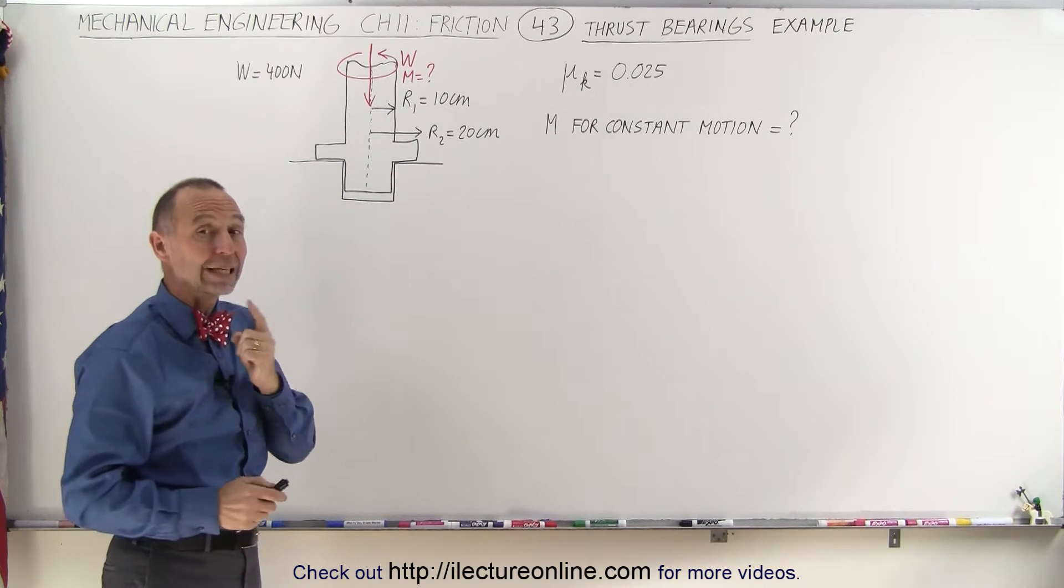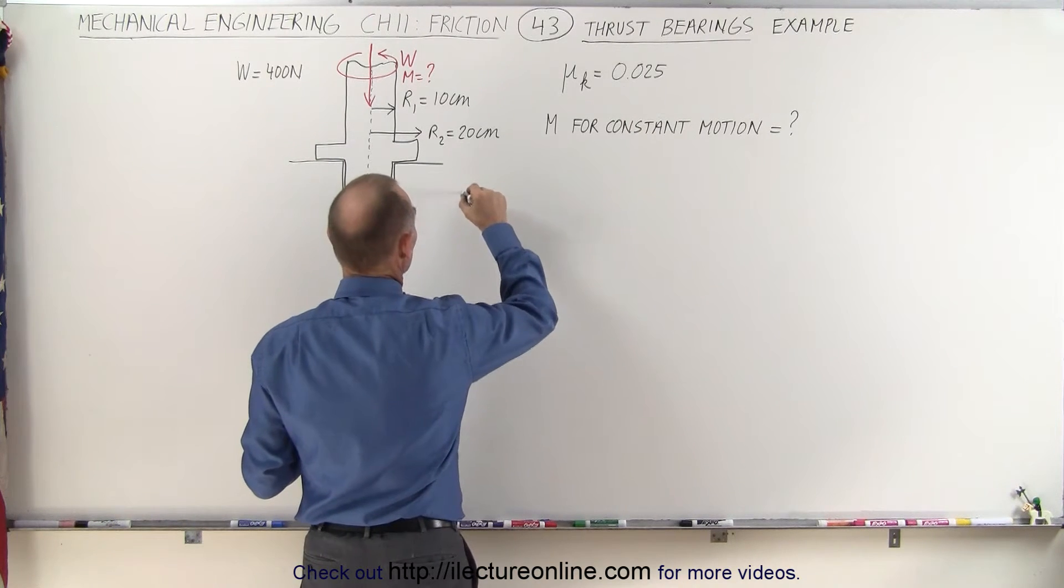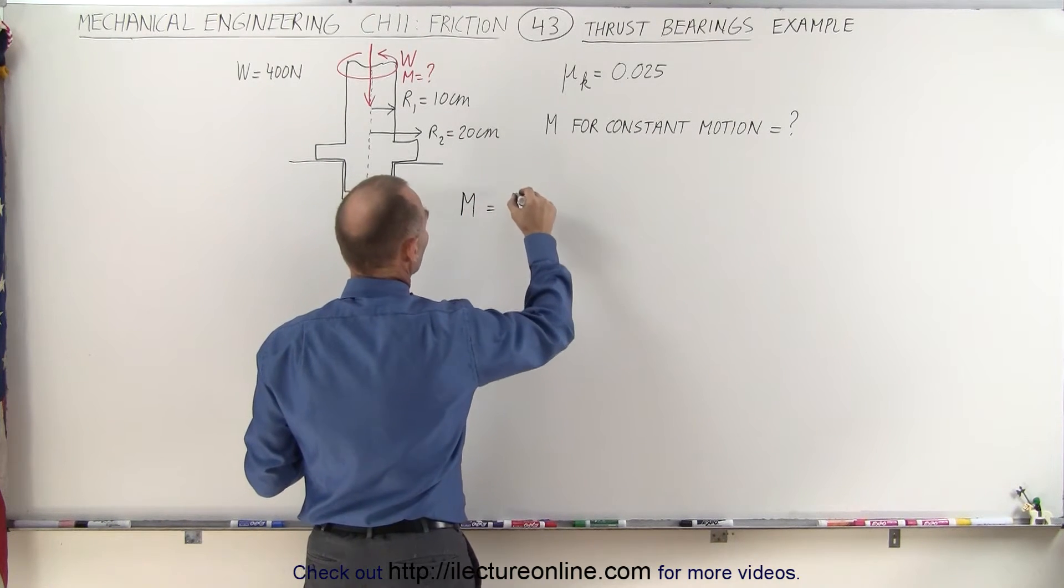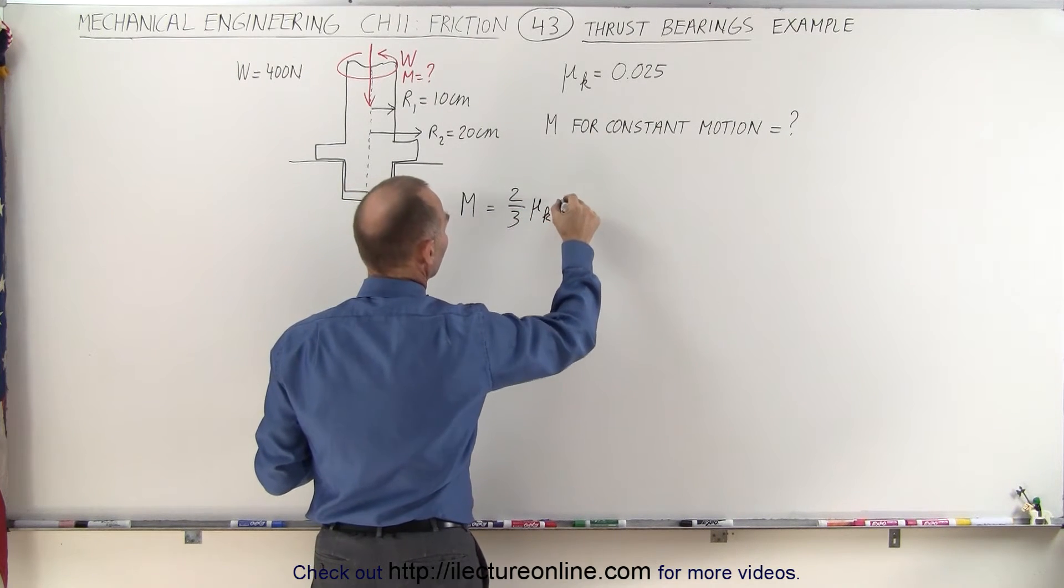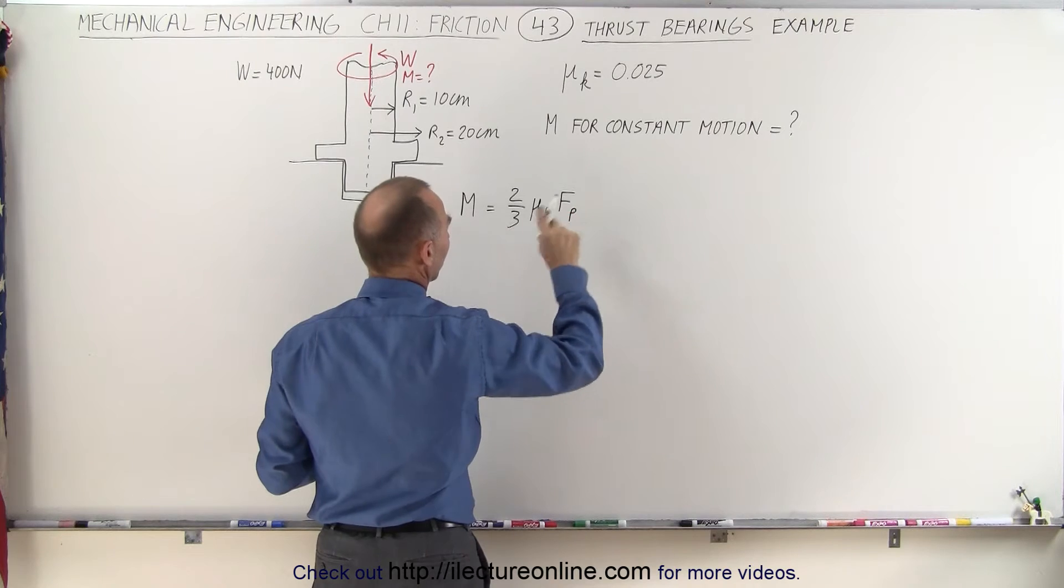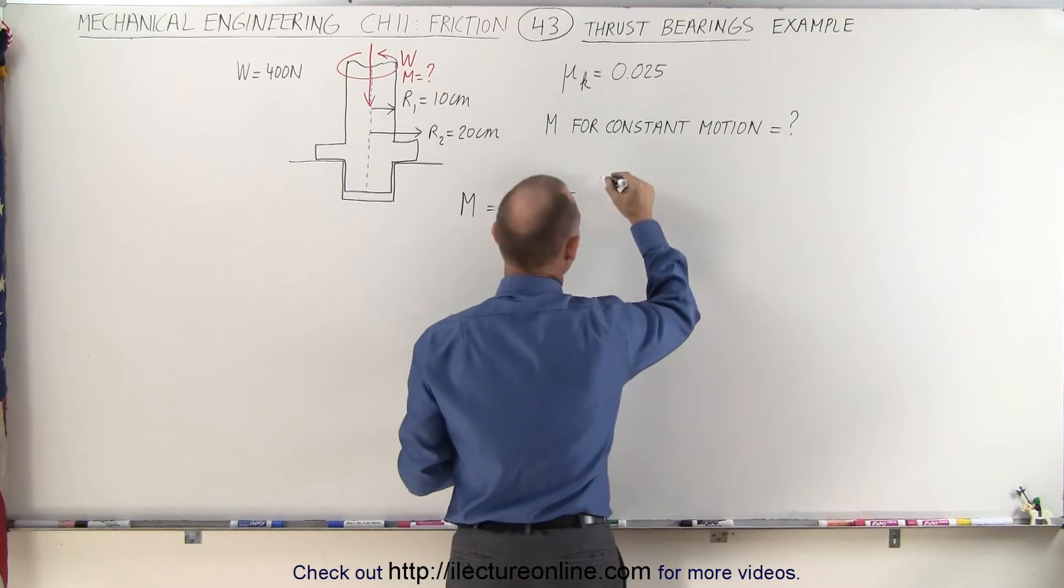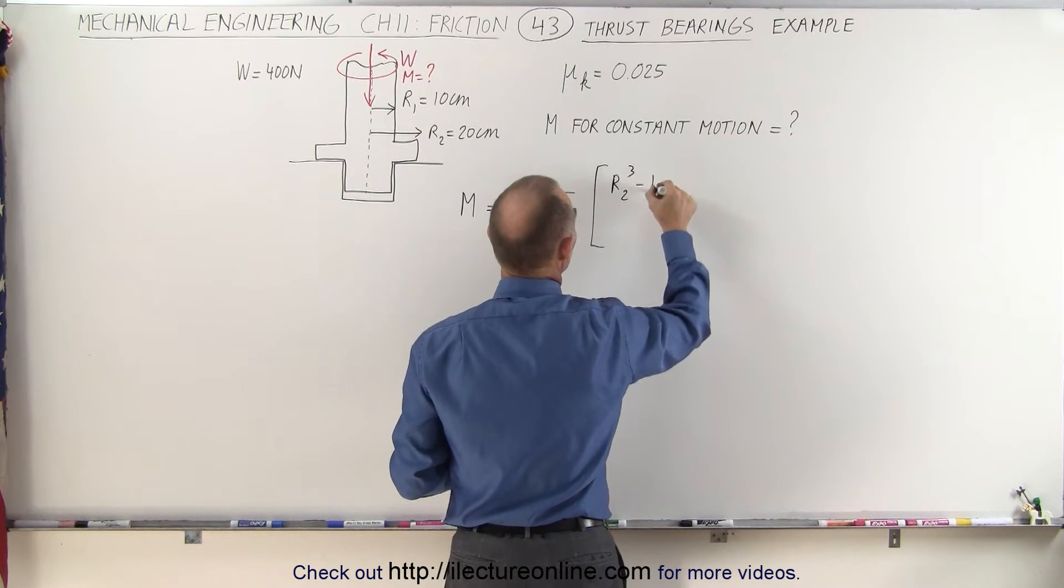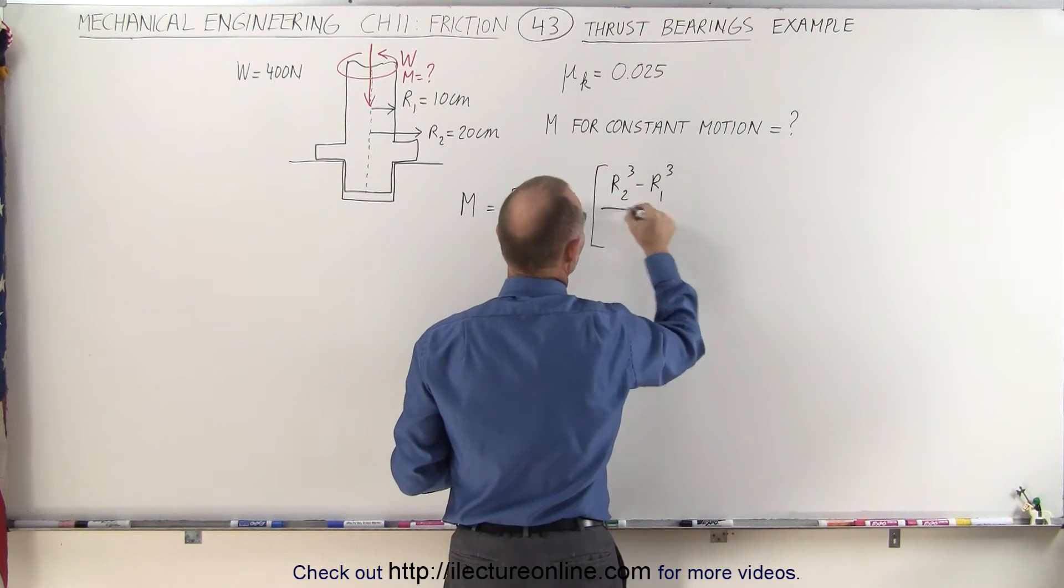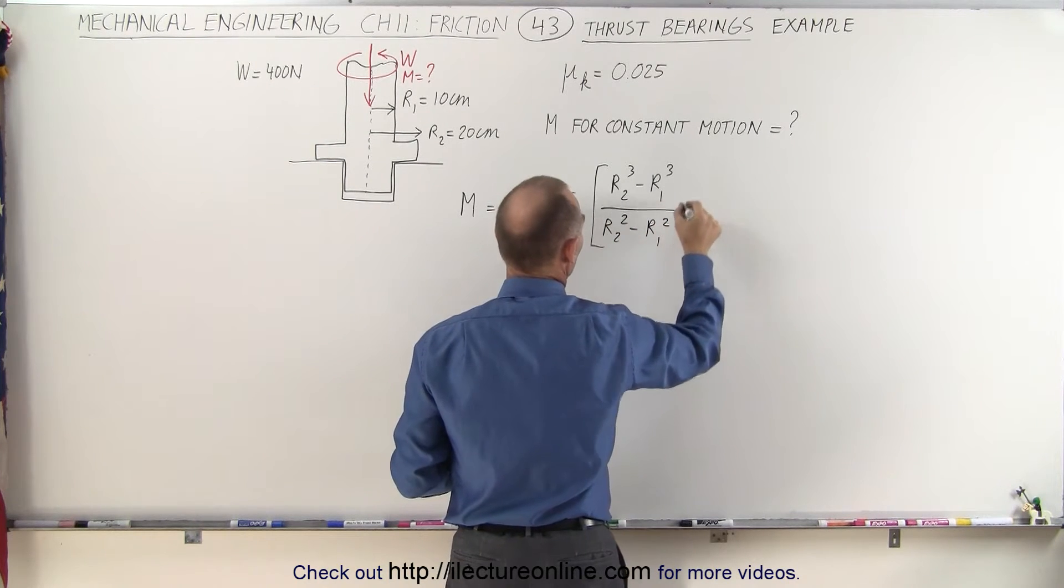How do we do that? Well, we need the equation that we derived a few videos ago, where we said that the moment is equal to two-thirds times the coefficient of kinetic friction times the force of the push against the bearing pushing into the housing times the ratio of r2 cubed minus r1 cubed divided by r2 squared minus r1 squared.